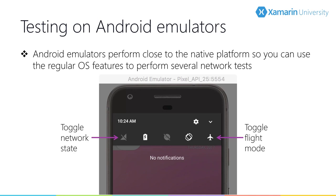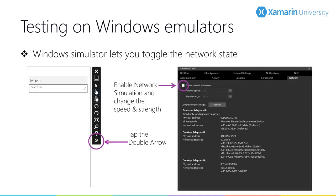The Android emulators are the closest emulator to the native platform, so turning on airplane mode or turning off Wi-Fi on the emulator will cause it to perform just as if it didn't have a network. When running on the Windows simulator, you can toggle the network state by selecting the double arrow to display the advanced tools and then enabling network simulation.